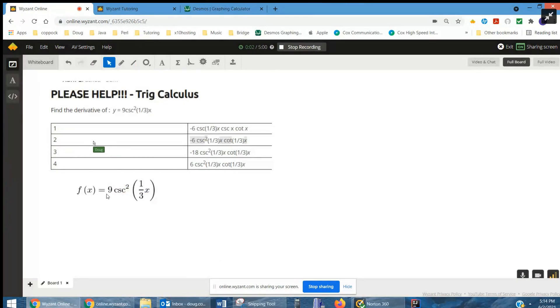I rewrote the function a little bit to look like this: f(x) = 9 csc²(⅓x). We're going to use the power rule followed by successive applications of the chain rule.